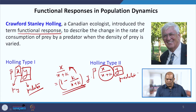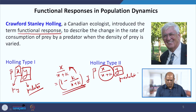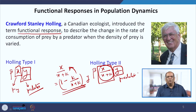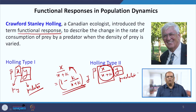Whenever a situation arises where one species has access only to a fraction of the other species, we generally use the Holling Type 2 functional response. In most real-life cases, this functional response is closer to the real-life scenario than Holling Type 1. But in mathematical modelling, we use simple functions, and if the simple function captures the dynamics of the model, we are quite happy about it.